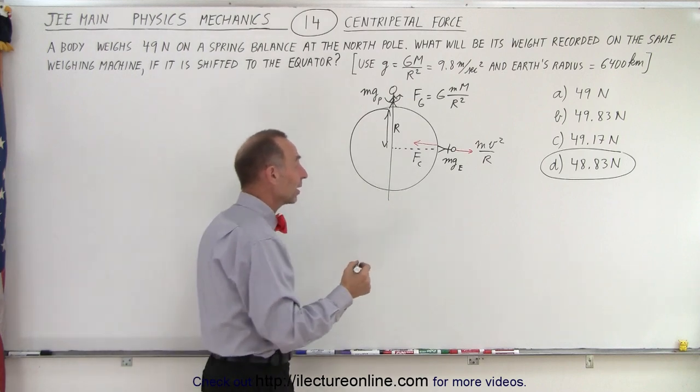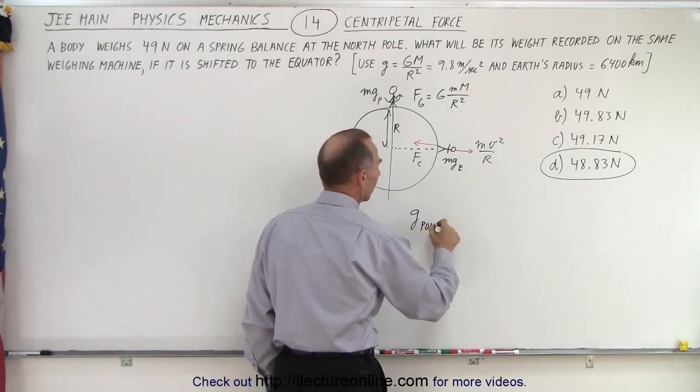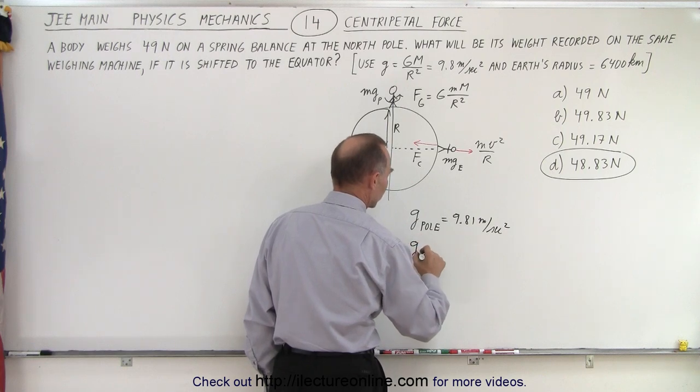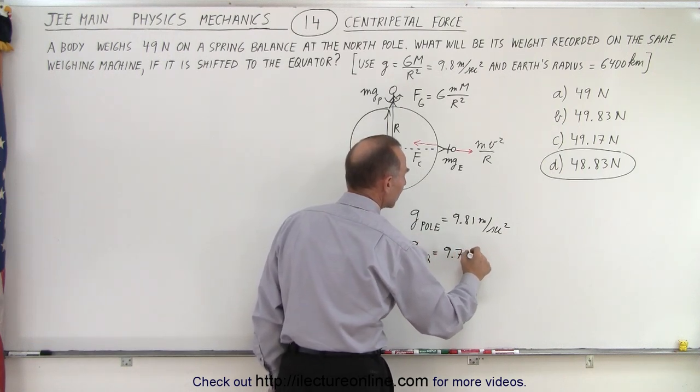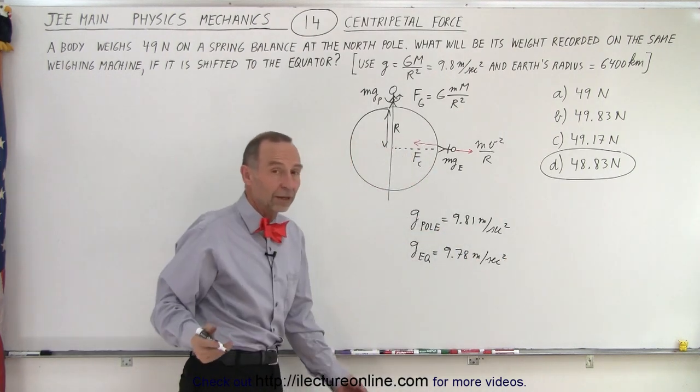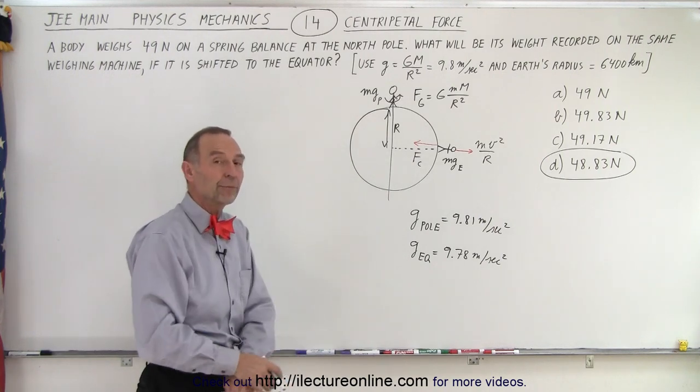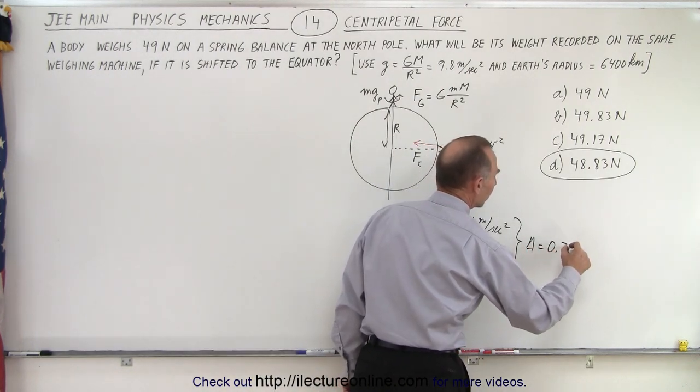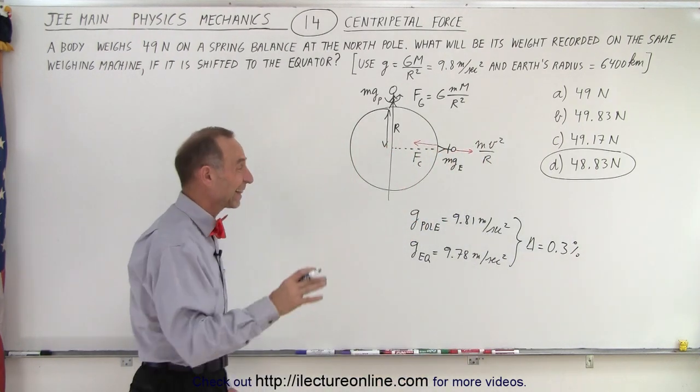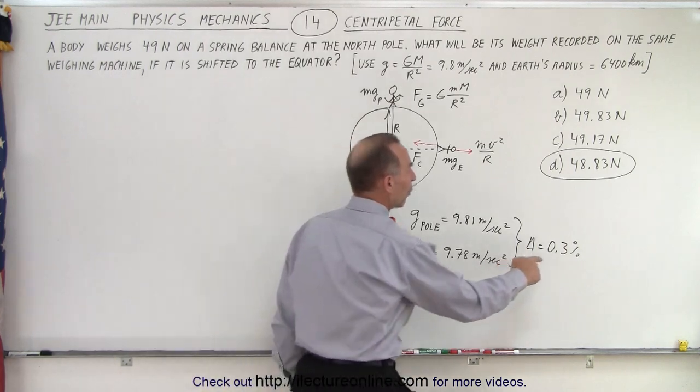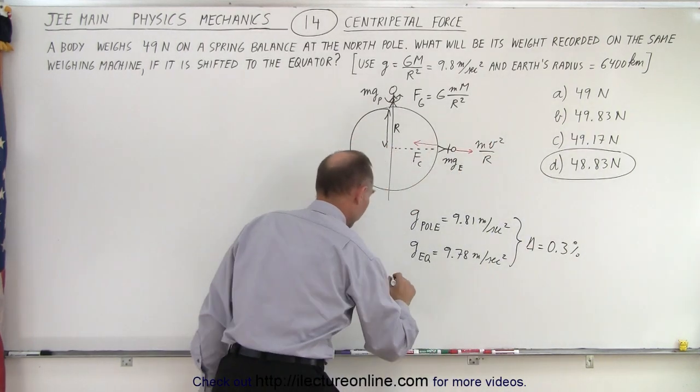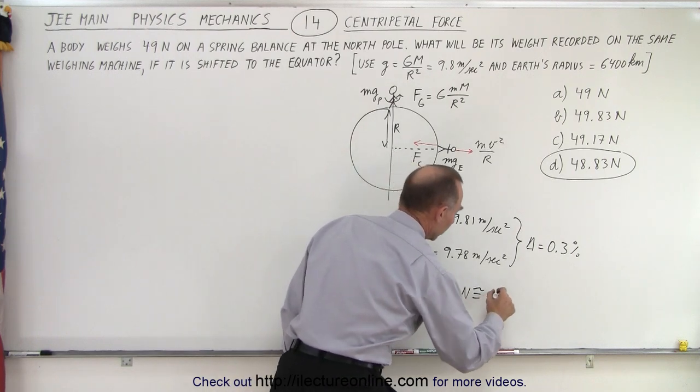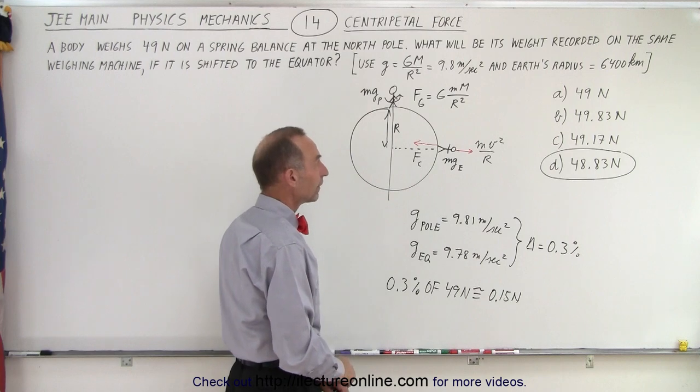Another way to look at this problem is to realize that the acceleration due to gravity at the pole is equal to 9.81 meters per second squared. And the gravitational attraction at the equator is equal to 9.78 meters per second squared. So by this alone, you realize you weigh less at the equator relative to the pole if you were familiar with those two numbers. Then you can see that the difference between the two is equal to 0.3%. So essentially, you weigh about 0.3% less at the equator than you do at the pole. Now, what is 0.3% of 49 newtons? So 0.3% of 49 newtons is approximately equal to 0.15 newtons.